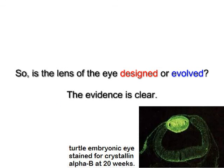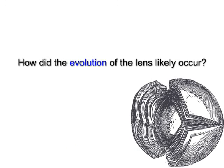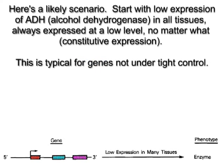So is the lens of the eye designed or evolved? The evidence is clear. Here's a likely scenario. Start with low expression of ADH in all tissues — always expressed at a low level no matter what. That's what we call constitutive expression.